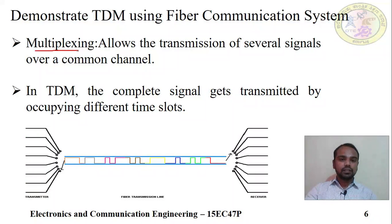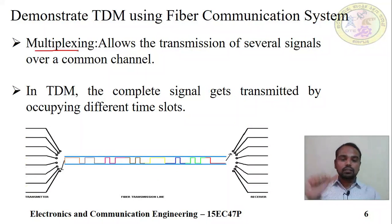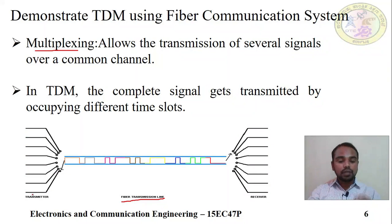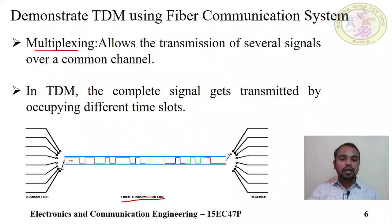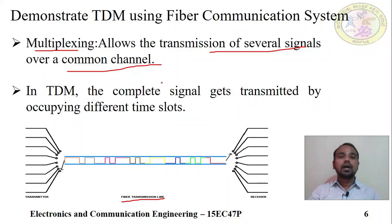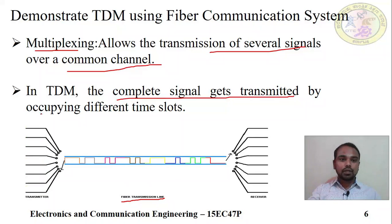Now, what is multiplexing? Multiplexing means many into one. We have many sources but we use only a single channel — a single fiber transmission channel. We combine or multiplex all these data and transmit over a single channel; that is called multiplexing. Several signals are transmitted over a common channel using a device called a multiplexer. In TDM, the complete signal gets transmitted by occupying different time slots.